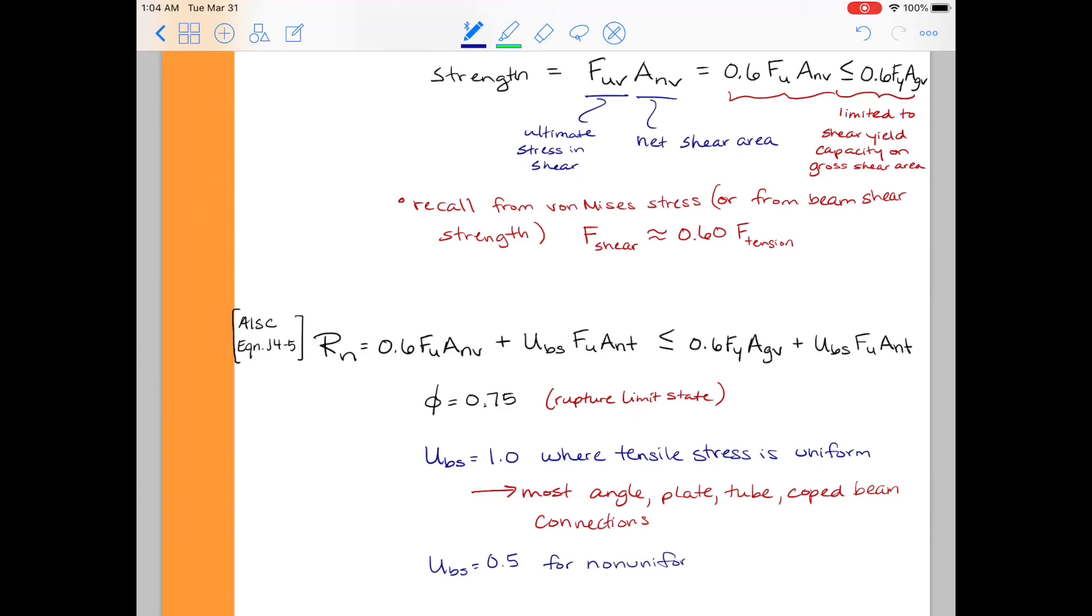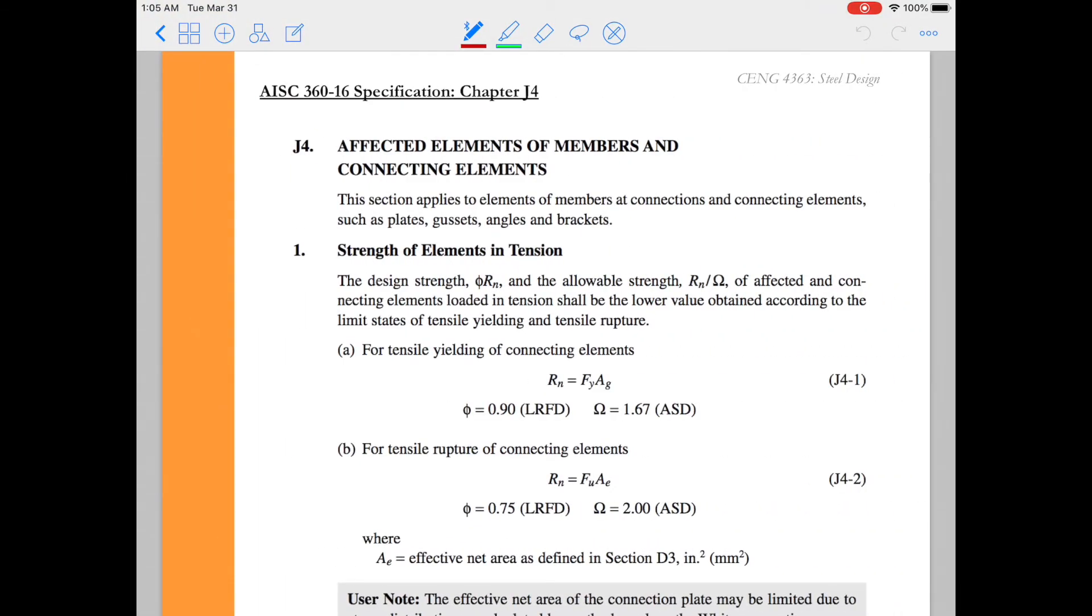Times when UBS is taken as 0.5 are for non-uniform stress. I would point you to the AISC commentary to better understand cases where this exists, but a lot of times it happens in a coped beam connection, but where you have two vertical lines of bolts attaching to the connection plate.